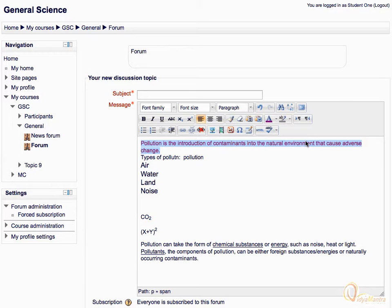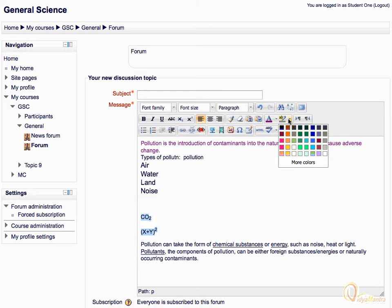We can also highlight text by using the change background color icon. Select some text and click expand change background color bar. Select the color for highlighting the text.